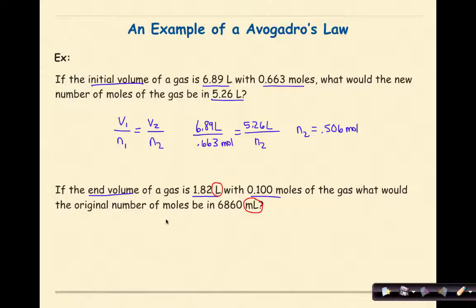So I'm going to write my formula. V1 over N1 is equal to V2 over N2. So we're solving for the original number of moles. So my unknown is N1.